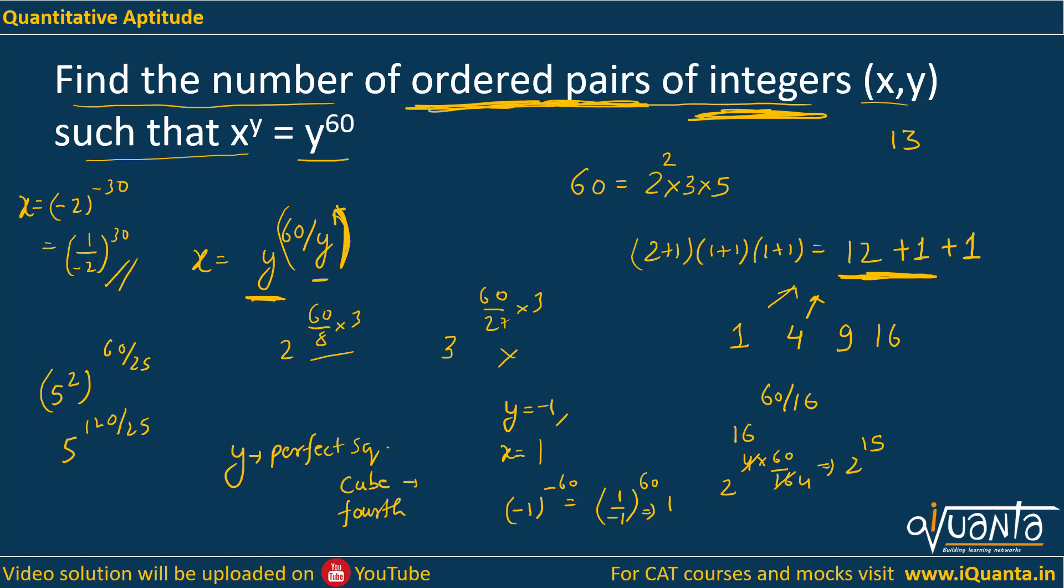Now one more thing is mentioned over here which is ordered pairs. Now you know what is ordered pairs. In ordered pairs we count pairs (a,b) and (b,a) separately, but only when both the pairs are satisfying the same equation. Like a few moments ago we got y equal to minus 1, x equal to 1. If I reverse this pair, if I make it minus 1 comma 1, so if I put y equal to 1, then I am getting x equal to 1 only. So we won't be counting the reverse of this. Both pairs are counted separately, but the condition is they should satisfy the same equation even after values being reversed.